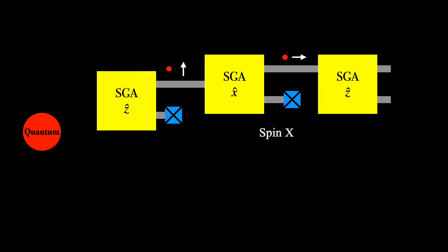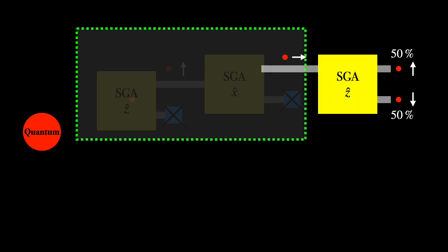Finally, the x down atoms are filtered out and only the x up atoms are fed into another apparatus oriented in the z direction. Surprisingly, the atoms come out once again 50% z up and 50% z down. Now I'd like to focus in on what is happening right before this final step here.